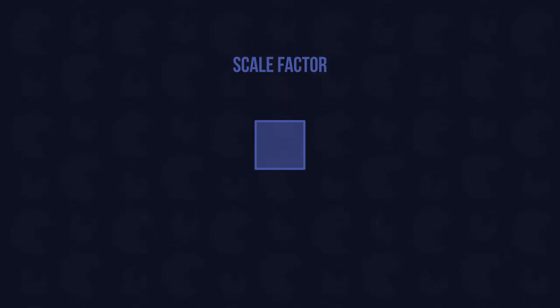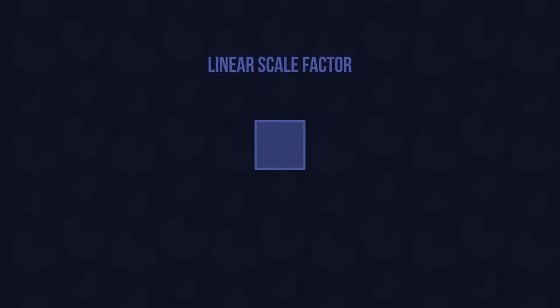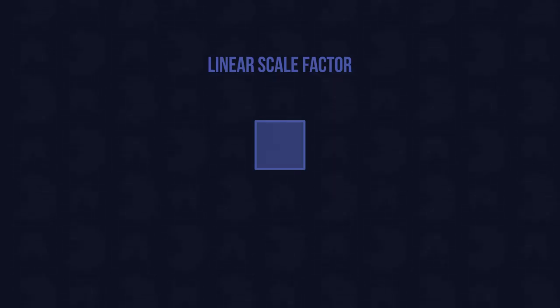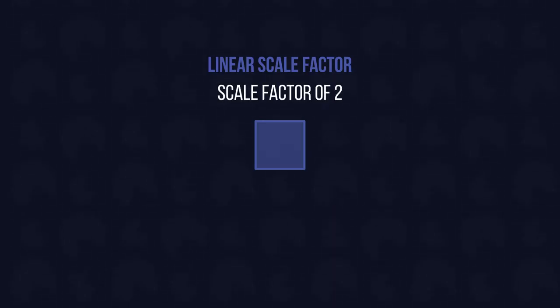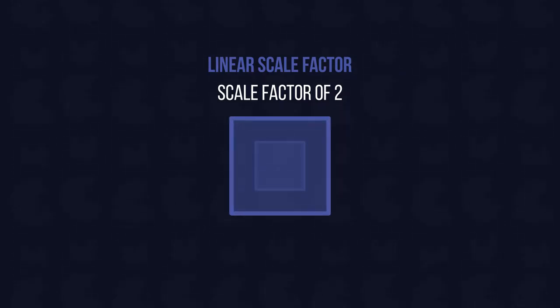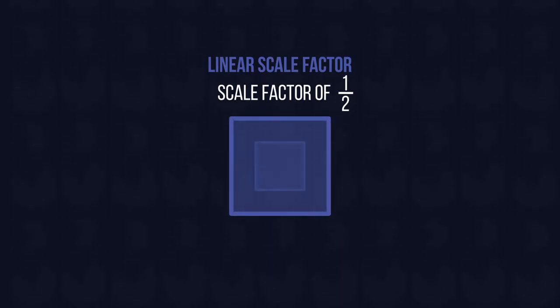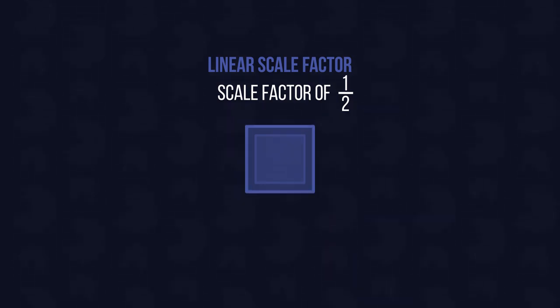When you change the size of a shape by making it larger or smaller, the degree to which you change its size is measured by something called its scale factor. A linear scale factor is simply the size of the enlargement or reduction of a shape. For instance, a scale factor of 2 means that the new shape is twice the size of the original. A scale factor of a half tells us the new shape is half the size of the original.